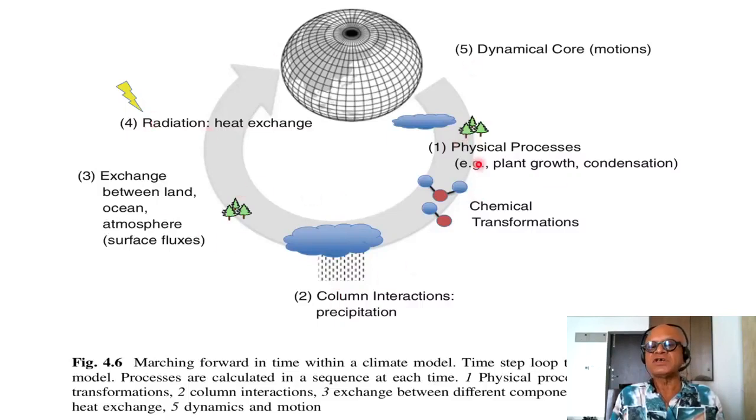Physical processes: plant growth, condensation, chemical transformation of CO2 into H2CO and CH2O. Column interactions where humidity is condensed and rained out, or evaporation from the ocean is loading up the moisture. There are exchanges between land and ocean and atmosphere, surface fluxes, river runoff, organic matter, inorganic matter.